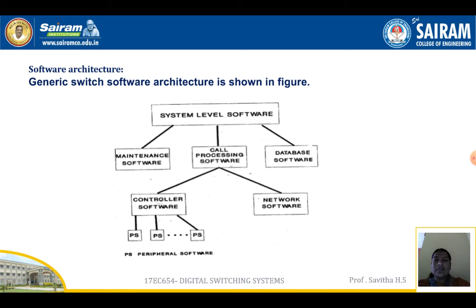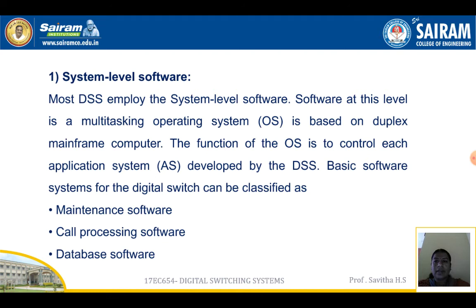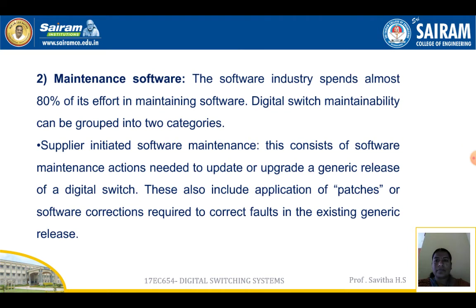The generic DSS software architecture is as shown in the figure. The main parts are: system-level software, maintenance software, call processing software, and database software. Call processing software is divided into two categories: controller software and network software. For controller software, peripheral software is connected. Most DSS employ system-level software at this level as a multitasking operating system based on a duplex mainframe computer. The function of the OS is to control each application system developed by the DSS.